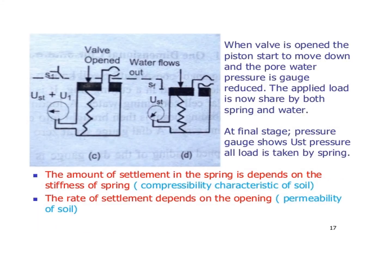When the valve is open, the piston starts to move down and the pore pressure on the gauge reduces. The applied load is now shared by both the spring and the water. At the final stage, the pressure gauge shows that almost all the load is taken by the spring. The amount of settlement in the spring depends on the stiffness of the spring, and the rate of settlement depends on the valve opening.